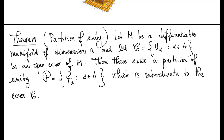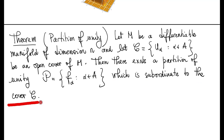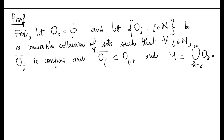Let M be a differentiable manifold of dimension n and let C be the collection of sets U_alpha, where alpha is in A, forming an open cover of M. Then there exists a partition of unity P consisting of functions f_alpha, alpha in A, subordinate to the cover C. For the proof, let O_0 be the empty set and let O_j, j running over the natural numbers, be the countable collection of sets such that the closure of O_j is compact, the closure of O_j is contained in O_{j+1}, and M is the union of all O_k — as established earlier.